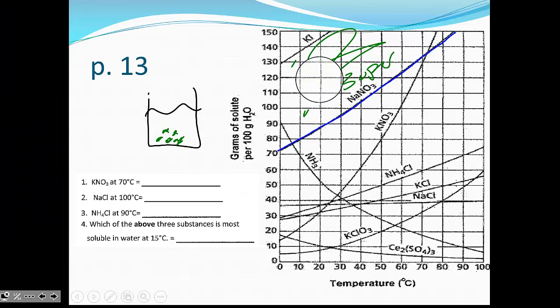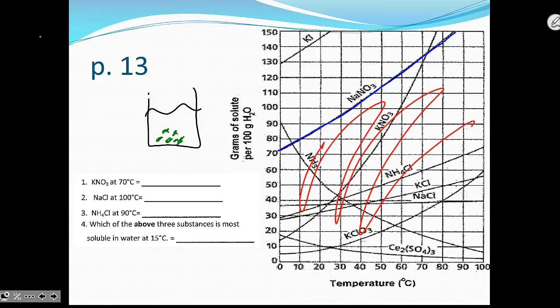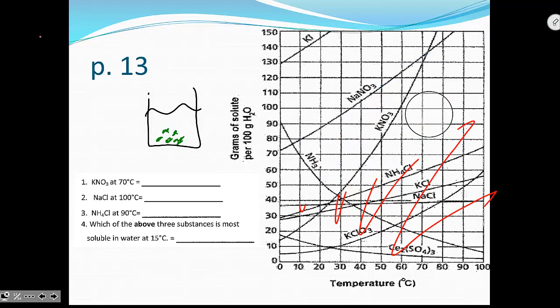So supersaturated is anywhere above the line. Unsaturated is anywhere below the line, where I've got more than enough water molecules to keep them separated from one another. So reading a solubility curve is simply a matter of reading the graph and knowing what you're talking about.